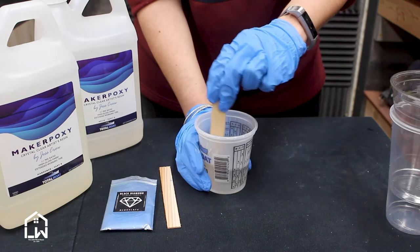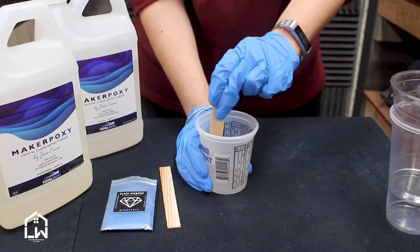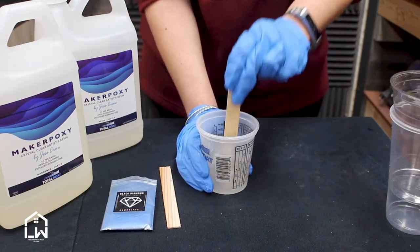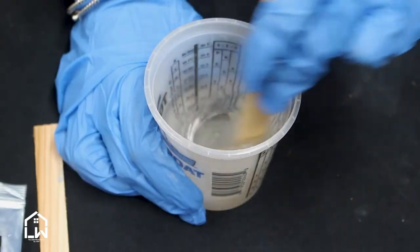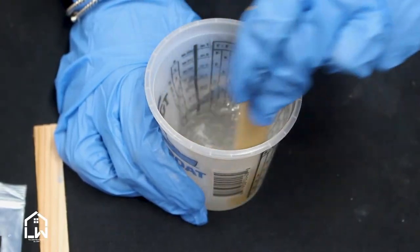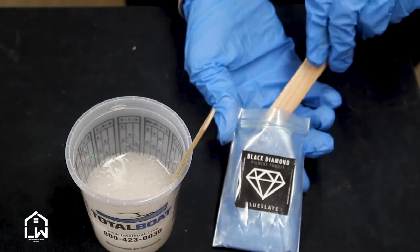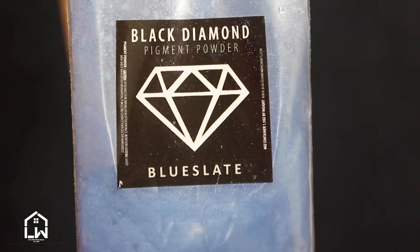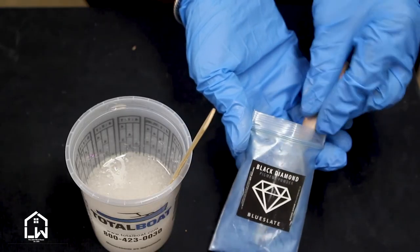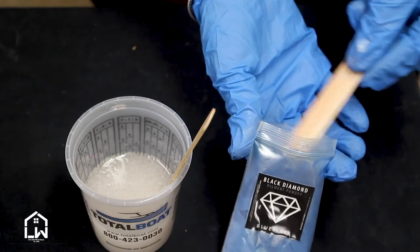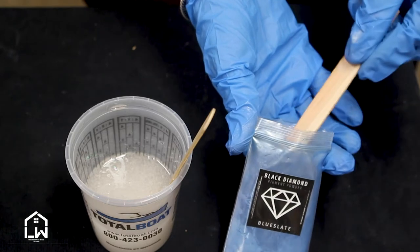Now we're going to stir vigorously for a while. I actually don't mind the bubbles in this because I'm making a splash and it's going to give texture. If you want to take the bubbles out, add a little heat or stir slower. All right, my black diamond pigment. I'm using that blue slate, which is super pretty. You do not need much—it goes a long way.